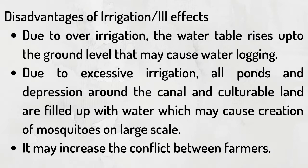Disadvantages of irrigation: Due to over-irrigation, the water table rises up to the ground level, which may cause water logging. Due to excessive irrigation, all points and depressions around the canal and cultivable land are filled up with water, which may cause the creation of mosquitoes on a large scale. It may also increase conflict between farmers.